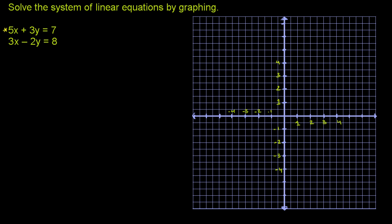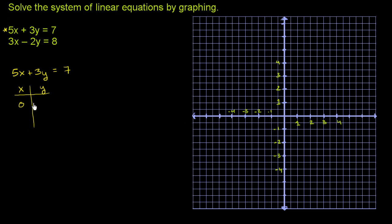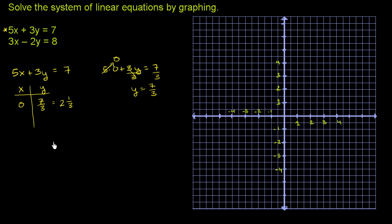Let's focus on the first equation: 5x plus 3y is equal to 7. I want to graph it, and there are a couple of ways — we could put it in slope-intercept form, or just pick some points. You really only need two points to graph a line. When x is equal to 0, we get 5 times 0 plus 3y equals 7, so 3y equals 7, and y equals 7 thirds, which is 2 and 1 third.